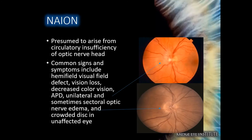Non-arteritic ischemic optic neuropathy, or NAION, is an optic neuropathy caused from a circulatory insufficiency of the optic nerve head. Common signs and symptoms include a hemifield visual field defect, vision loss, decreased color vision, or an APD. You can also see unilateral sectoral optic nerve edema in the image above, and in the image below the disc is crowded in the unaffected eye.